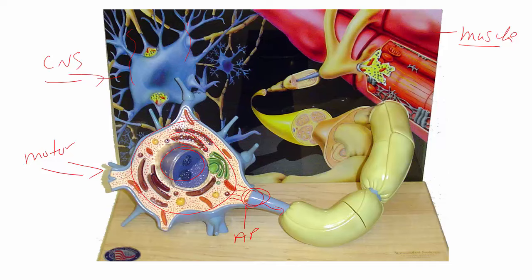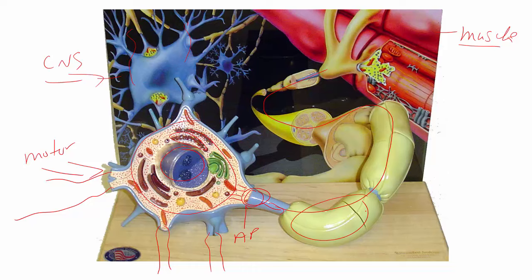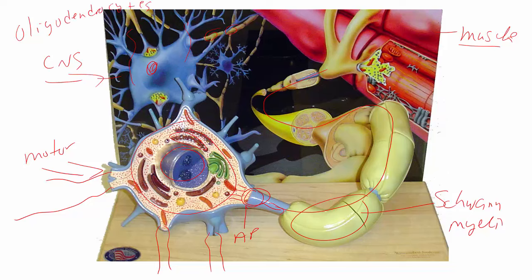The dendrites are the receiving end — on this model they've been cut off, but imagine them extending outward. The long blue structure covered with yellow is the axon. The yellow wrapping is called a Schwann cell, which makes the myelin sheath that insulates the axon and allows the action potential to travel faster. In the central nervous system, you also see myelin, but there it's made by oligodendrocytes. So in the peripheral nervous system it's Schwann cells; in the central nervous system it's oligodendrocytes — that's one of your major differences.